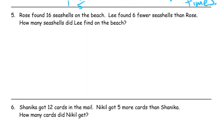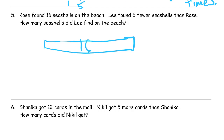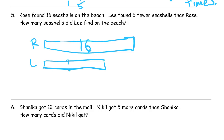Rose found sixteen shells on the beach. Lee found six fewer seashells than Rose. How many seashells did Lee find on the beach? So Rose's piece of tape has sixteen seashells. Lee found six fewer than Rose, so here's Lee and Lee found fewer — so it's going to have to be less. How many seashells did Lee find on the beach? That's what we're trying to find out. We know the fewer.